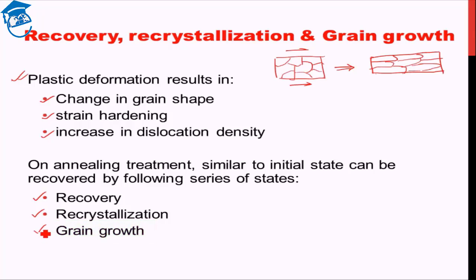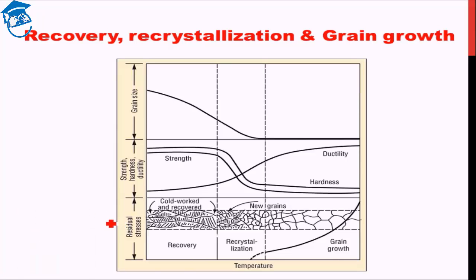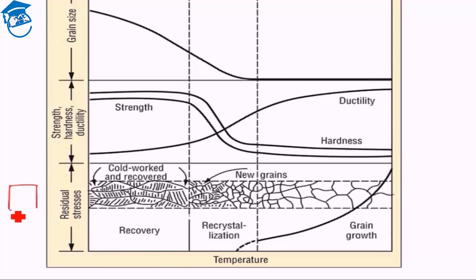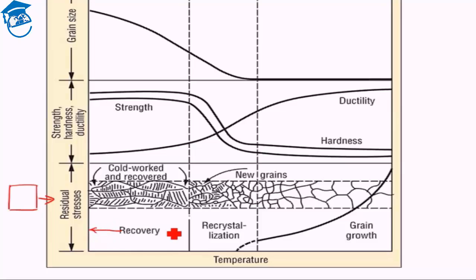Let's see each stage individually. After cold working we have elongated grains, increased strength, and reduced ductility. In the recovery stage, there is no observable difference in microstructure — it remains elongated — but what we observe is that ductility is marginally improving and strength more or less remains the same.